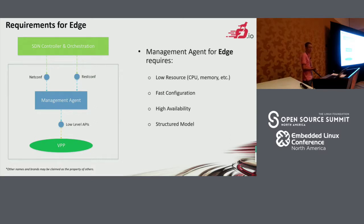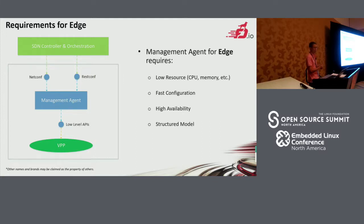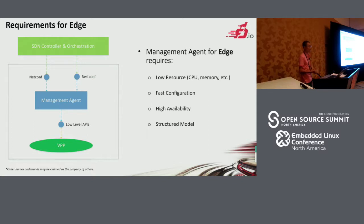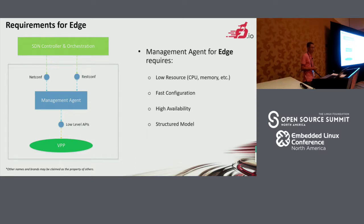First of all, the requirements for edge networking. On the top side, it's the traditional SDN controller networking. The SDN controller orchestration will configure through netconf, restconf, and other northbound interfaces to the data plane. For many SDN controllers and orchestrations, configuration is using YANG models. So we need a management agent in the middle to translate the YANG models to the low-level APIs, such as VPP, DPDK, and the Linux kernel.